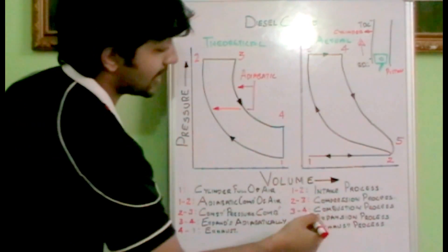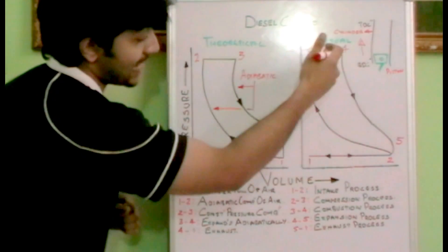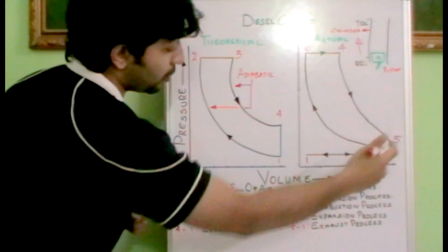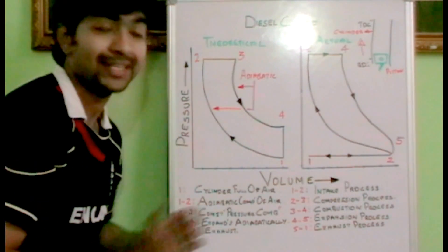Then at the end the fuel gets injected and the constant pressure combustion process is happening from 3 to 4. And 4 to 5, again the expansion process is happening. And 5 to 1, the exhaust is happening.